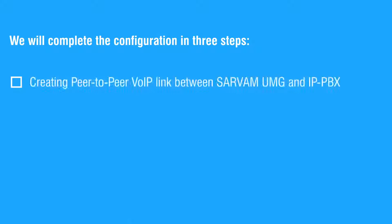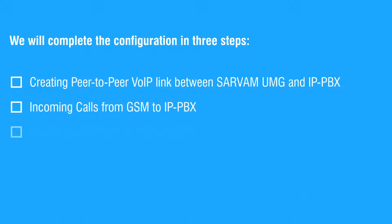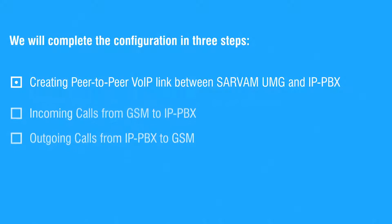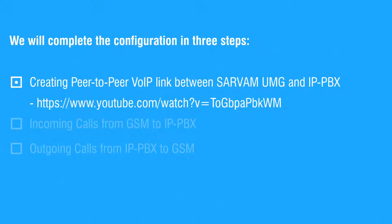Let us see the configuration. We will complete the configuration in 3 steps: creating a peer-to-peer VoIP link between Servum UMG and IP PBX, incoming calls from GSM to IP PBX, and outgoing calls from IP PBX to GSM. To know how to create a peer-to-peer VoIP link, see our video 'Peer-to-peer Calling in Servum UMG' on our YouTube channel.